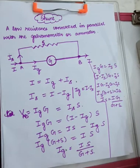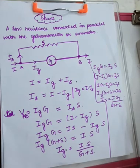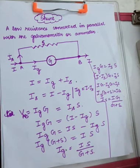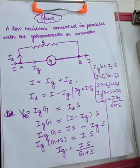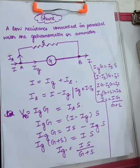A galvanometer is the device which is used to detect the current flowing in any circuit. Suppose you have a galvanometer and you connect it in a circuit to detect the current. If the current flowing in the circuit is much more than expected, then the galvanometer will experience a large amount of current and may get damaged. So to avoid those situations, we use a shunt.